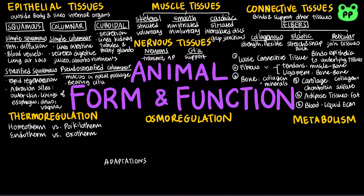Adaptations for thermoregulation include insulation by skin, feathers, fur, or blubber. Circulatory adaptations include vasodilation, or the widening of superficial blood vessels, which increases heat transfer, and vasoconstriction, or the narrowing of blood vessels, which reduces blood flow and decreases heat transfer.